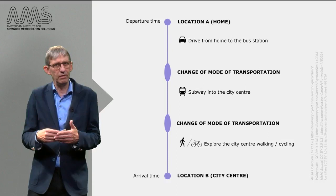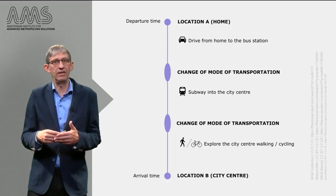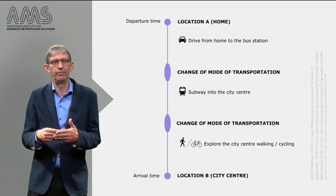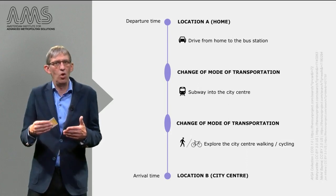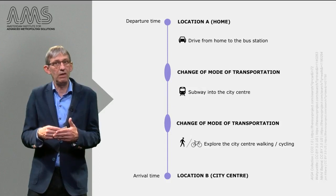In this example, you follow a particular mobility chain that already involves three different modalities. As an experienced traveler, you will know how to connect the different modalities as you navigate through the city. You know where to change from the bus to the underground, how to use the city bike system, and whether it will save you time if you take a bike instead of the subway.